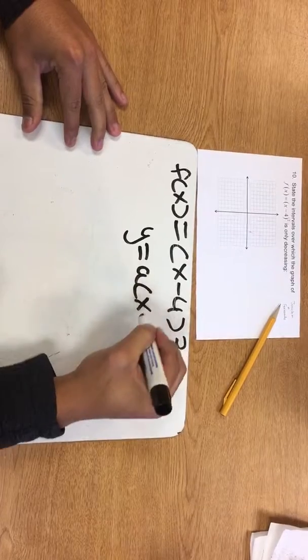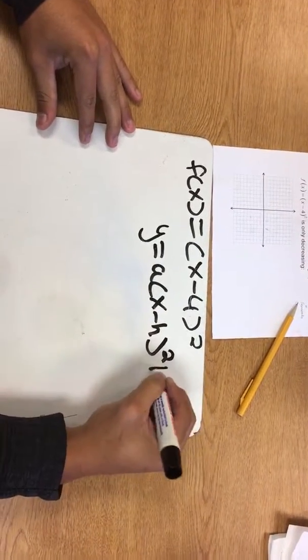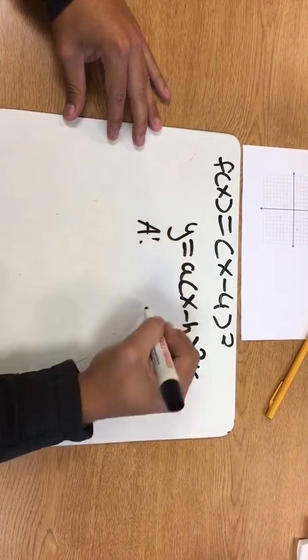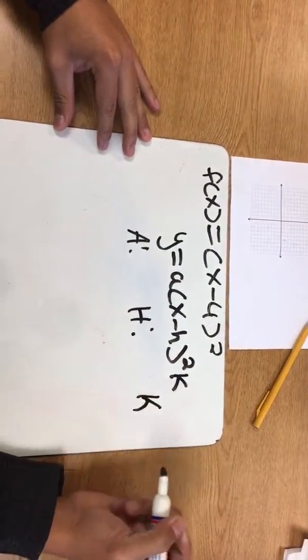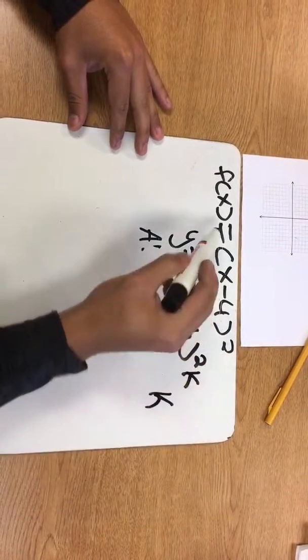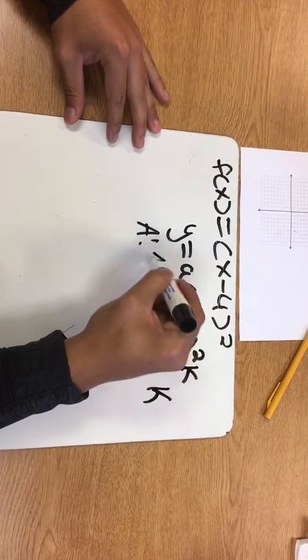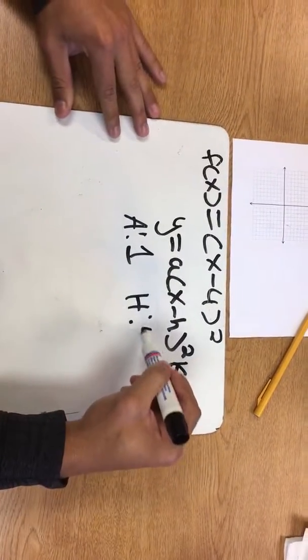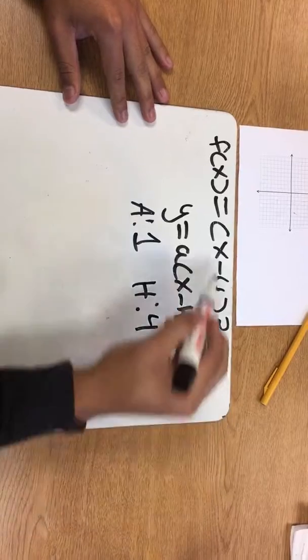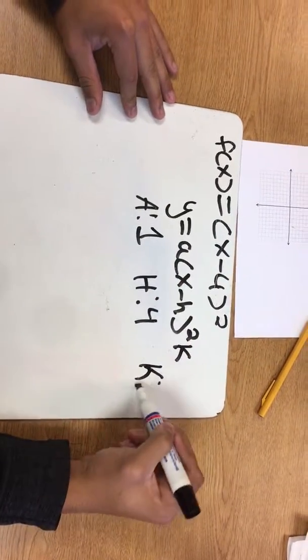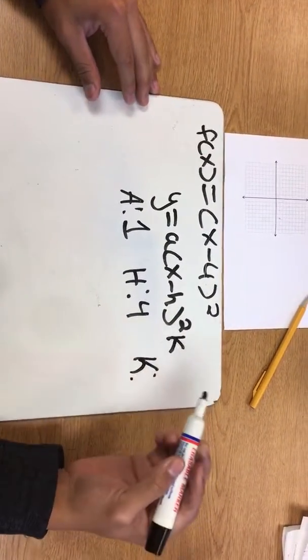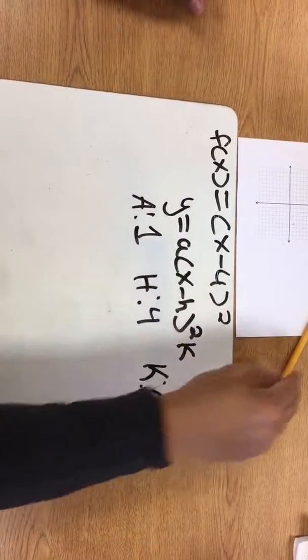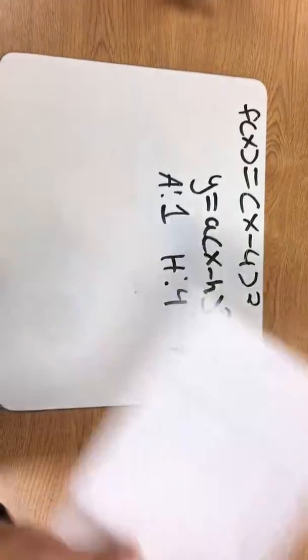First we're going to label our a, h, and k. a will be one because there's no number in front, so just one. For h it's a positive 4 because for h we have to switch the sign from negative to positive. And our k, there's nothing in front of the parentheses, so it's going to be zero. Now we're going to plot it.